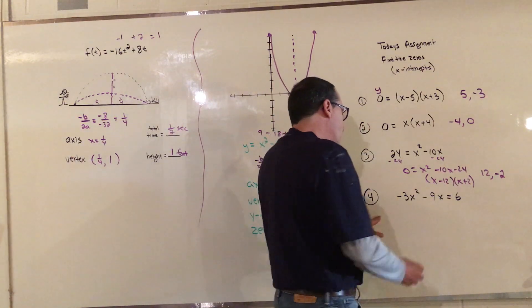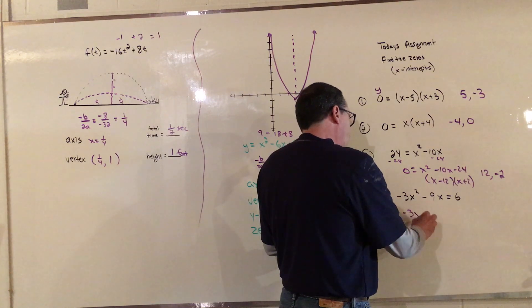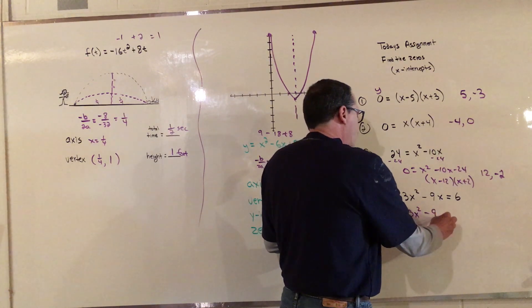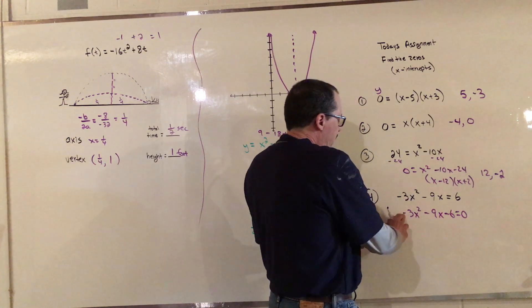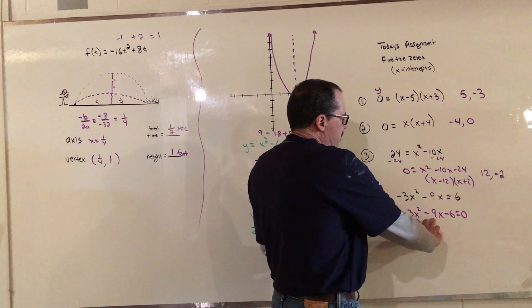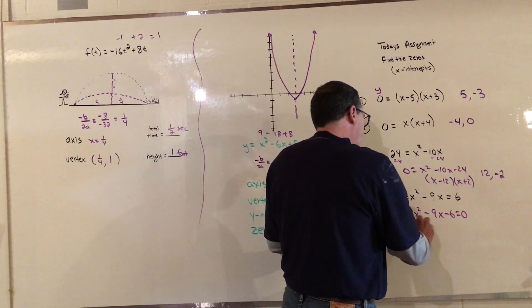And then I'll do the last one here. This one, what I do first is get everything on one side. So negative 3x squared minus 9x minus 6 equals 0. Then I don't want a negative here, and if you look, it has a GCF of negative 3. This is the toughest kind you'll see. So we're going to divide this whole side right here, everything by negative 3.